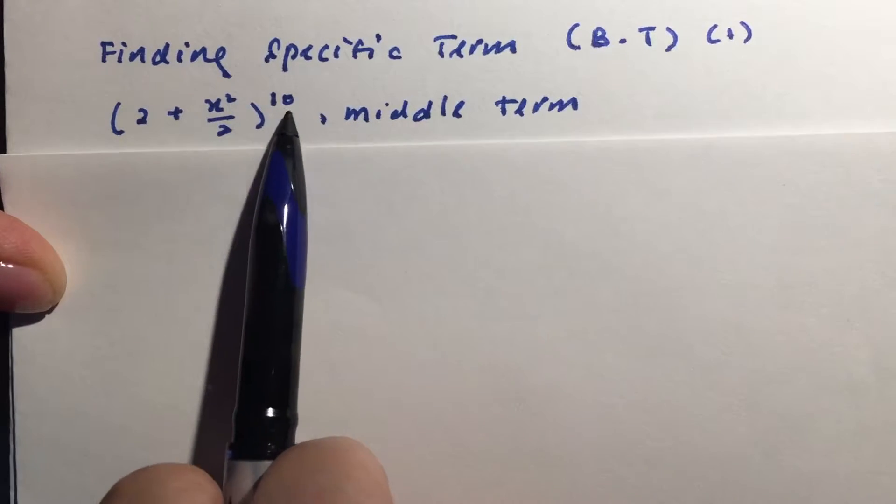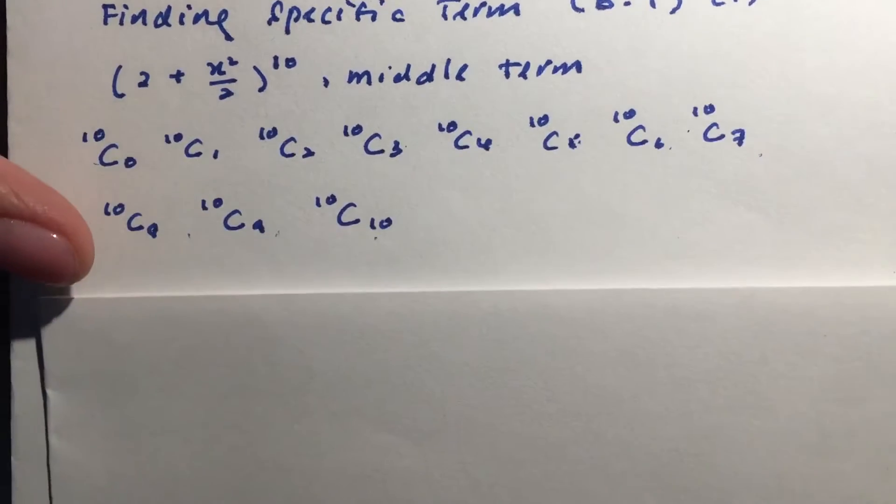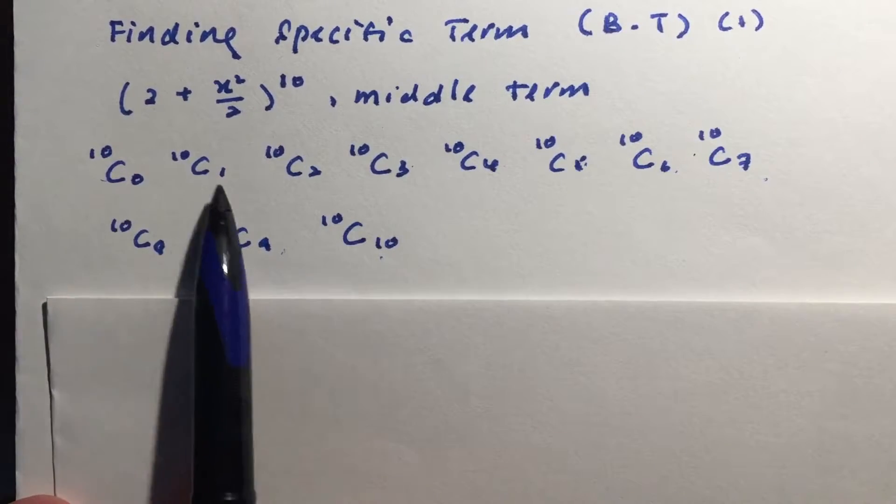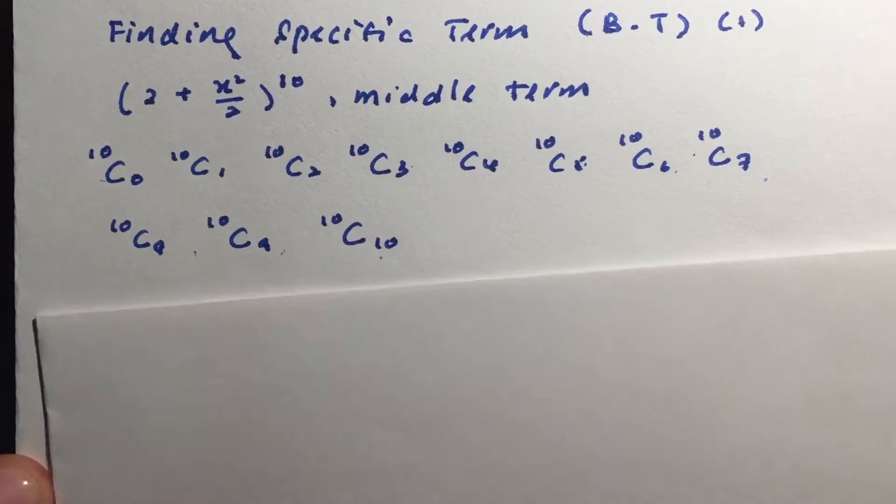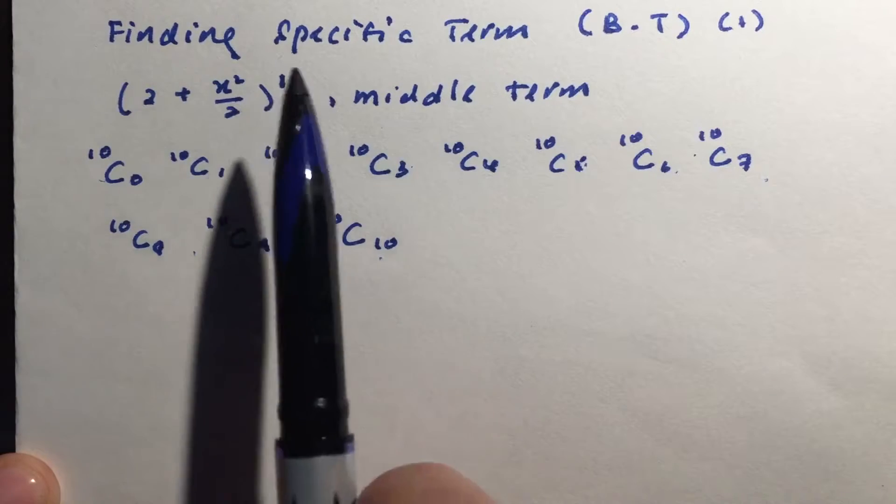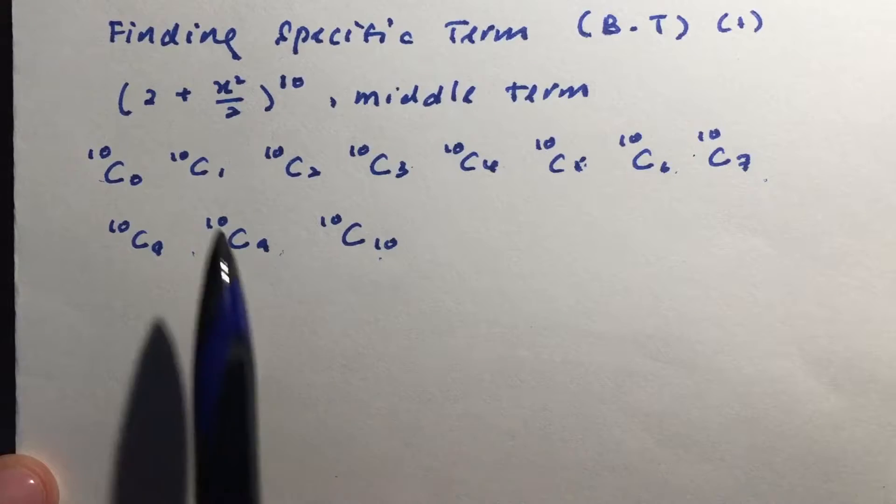Now, when you have power of 10, in other words, it means that you have all these terms: 10 choose 0, 10 choose 1, 10 choose 2, all the way until 10 choose 10. Now, if you actually count, it's actually power of 10, but you actually have 11 terms.